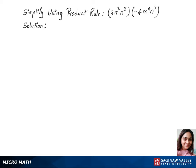To simplify this expression, we'll use the product rule of exponents. We'll write the like bases together first: 3 times minus 4, times m power 2 and m power 4, times n power 5 times n power 7.